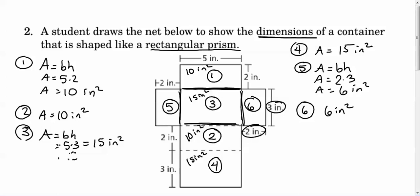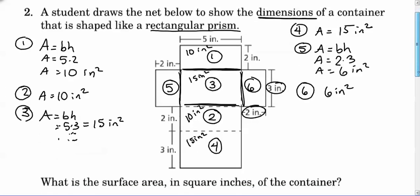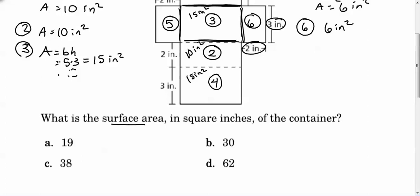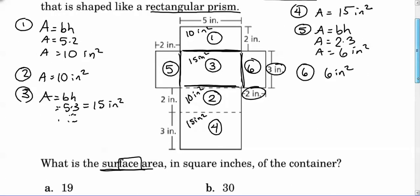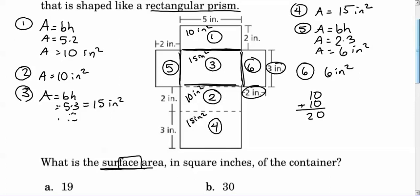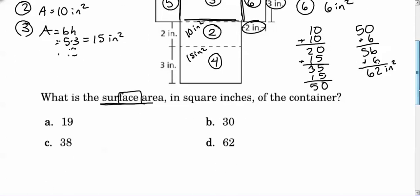So to find the total surface area, let's read the question. It says what is the surface area? That means the area of all of the faces. So each of these rectangles are a face of this shape. And it says in square inches of the container. So we need to take all of these areas and just add them together. So we have 10 plus 10, which equals 20. Then we've got 15, which is 35, plus another 15, which is going to give us 50. And we've got the 6, and then another 6. So this is a 62 square inch surface area. So that's choice D.